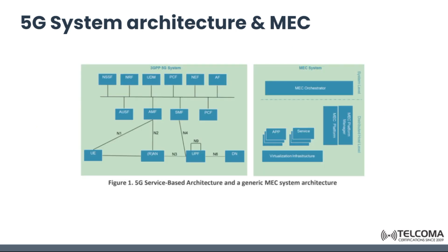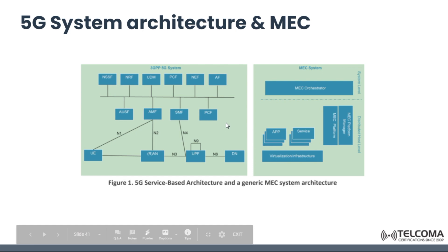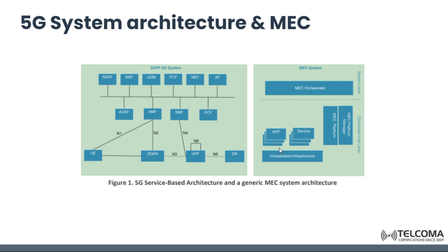This is the 5G system architecture and MEC system. We can see the 5G service based architecture: the UE is connected with the RAN, then via the N3 interface to the UPF, and then to the data network. All the functions are arranged — authentication, access and mobility management functions. The MEC system has virtualization infrastructure, various applications and services, a MEC platform and platform manager at the distributed host level, and at the system level there is a MEC orchestrator.